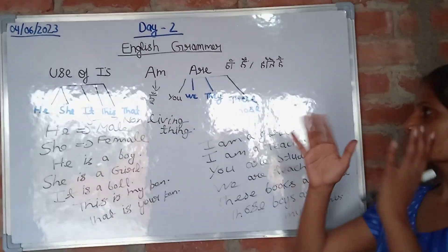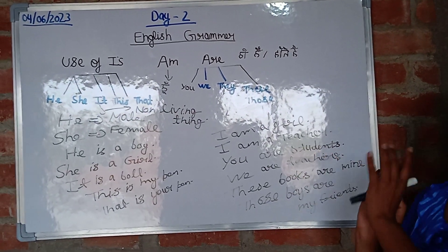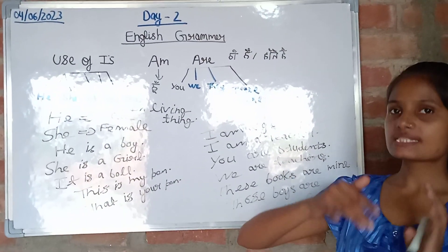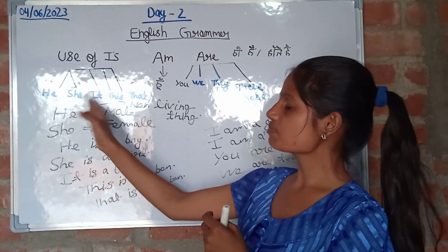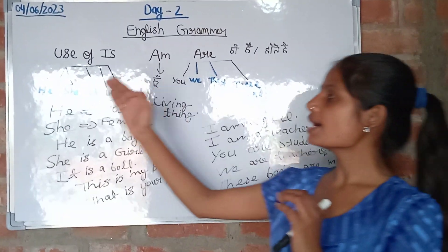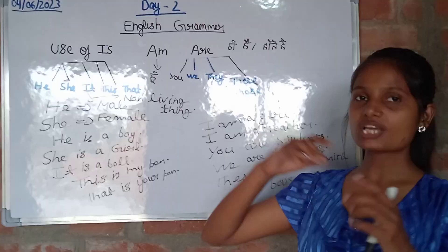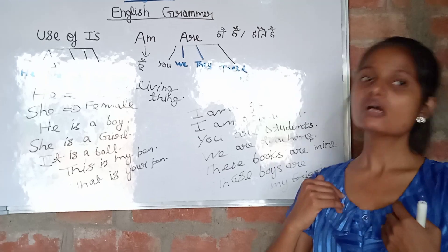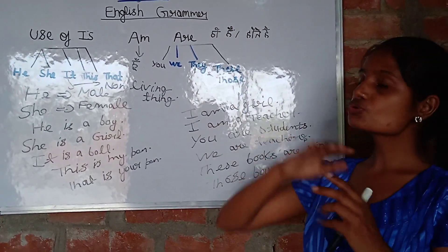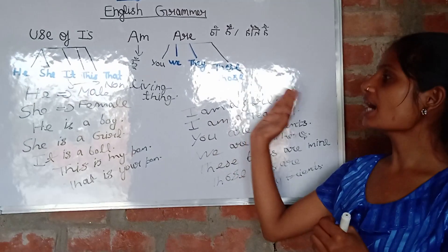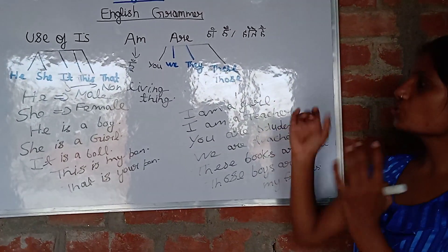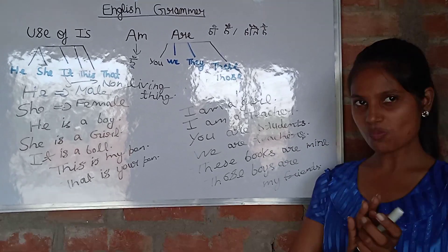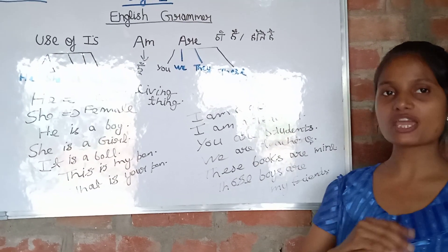To summarize: 'is' is used for singular — for example, this is my pen, she is a girl, he is a boy. 'Am' is used for expressing ourselves: I am a facilitator, I am a teacher, I am a girl. 'Are' is used for plural: we are students, they are students, you are students. Like this we can use is, am, and are.